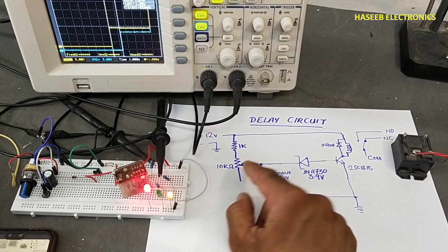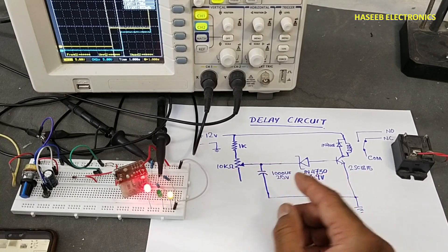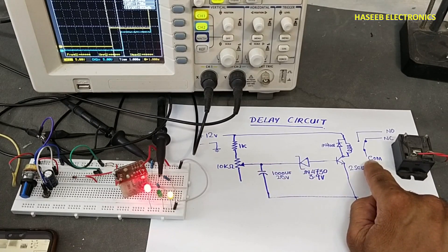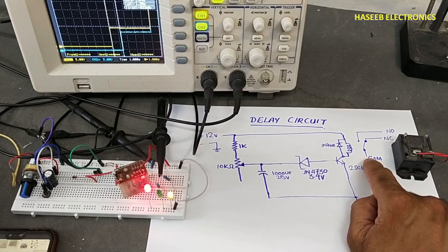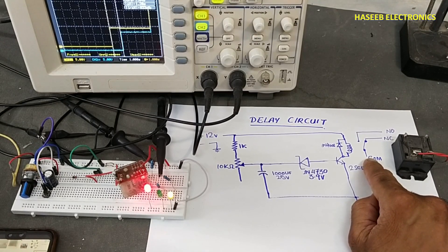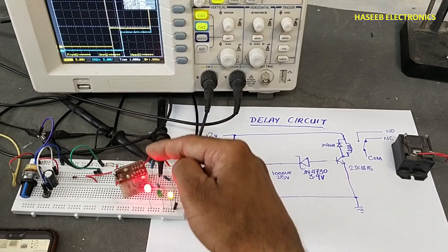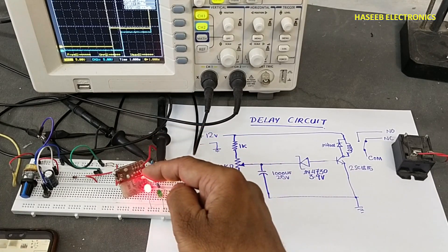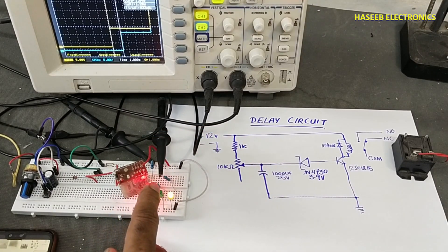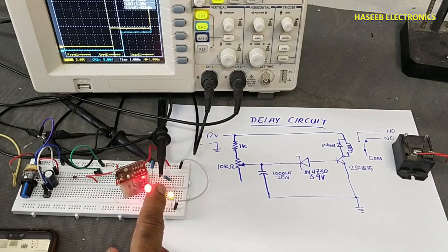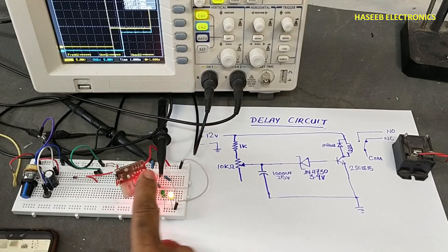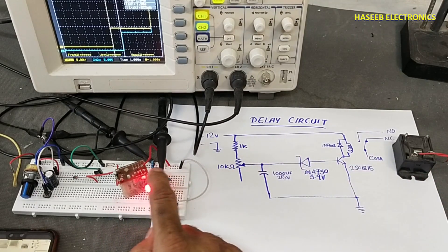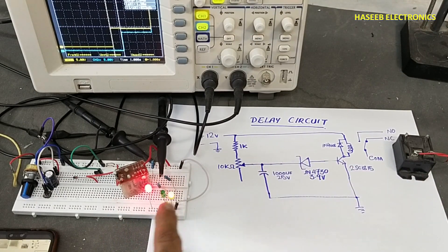The common point will be input for our load voltage. In this condition I am providing 12 volts to the common and one is the normally closed point. When the relay is off, this will remain on. When the relay turns on, at that time it will shift the supply to this point.